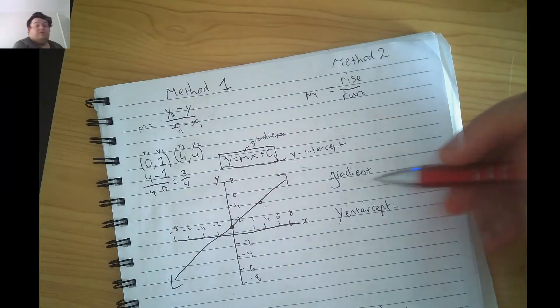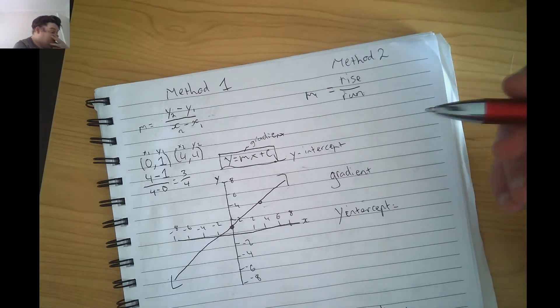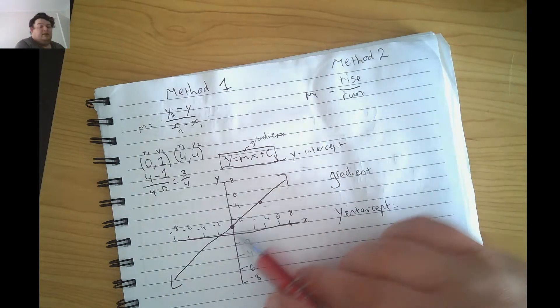That gives me a gradient of 3 over 4. You can change it to 0.75 if you want, but 3 quarters is our gradient.